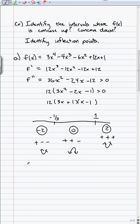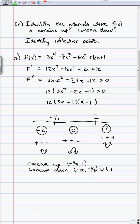So the function is concave up on (negative infinity, negative one-third) and on (1, infinity), and concave down on (negative one-third, 1). Notice that just like with increasing and decreasing intervals, I don't include the endpoints — I always use open parentheses.